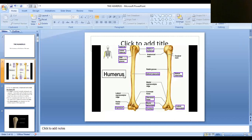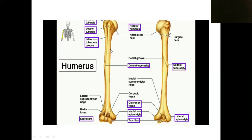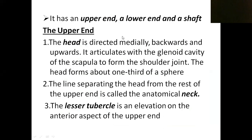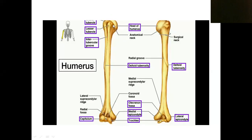This is the anterior view of the humerus, and this one is the posterior view. The humerus is a long bone with three parts: upper end, shaft, and lower end.